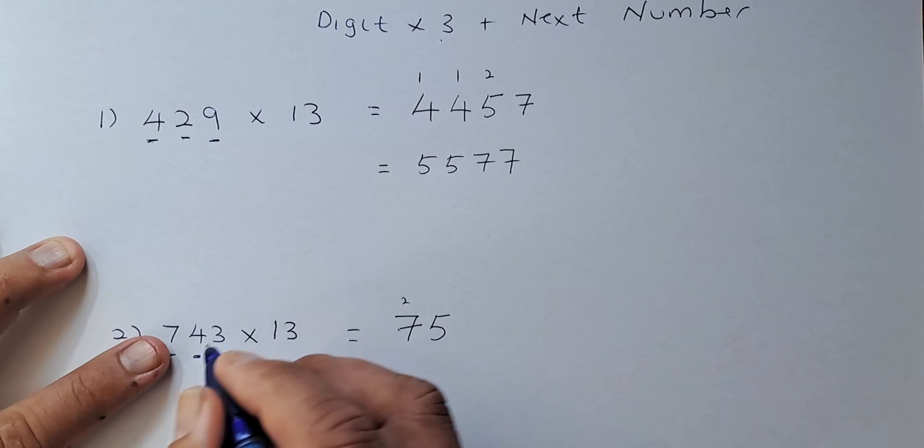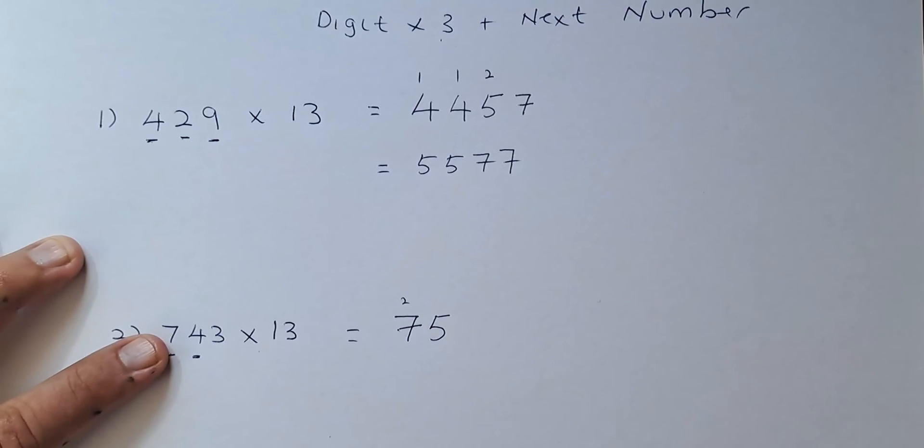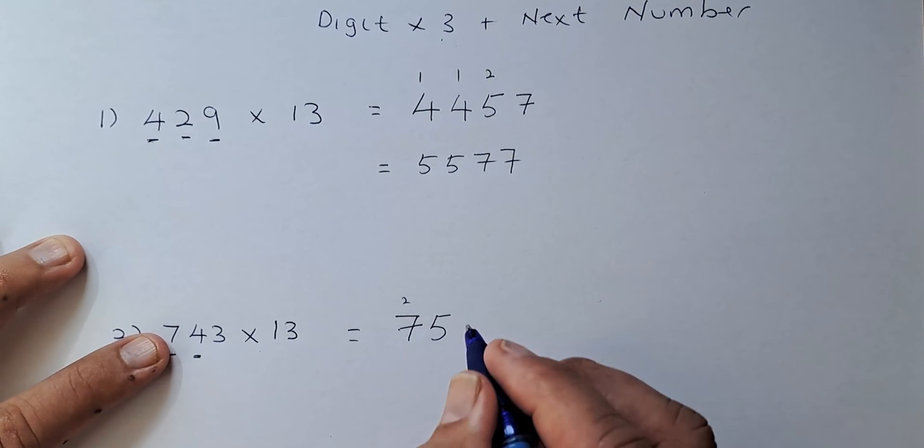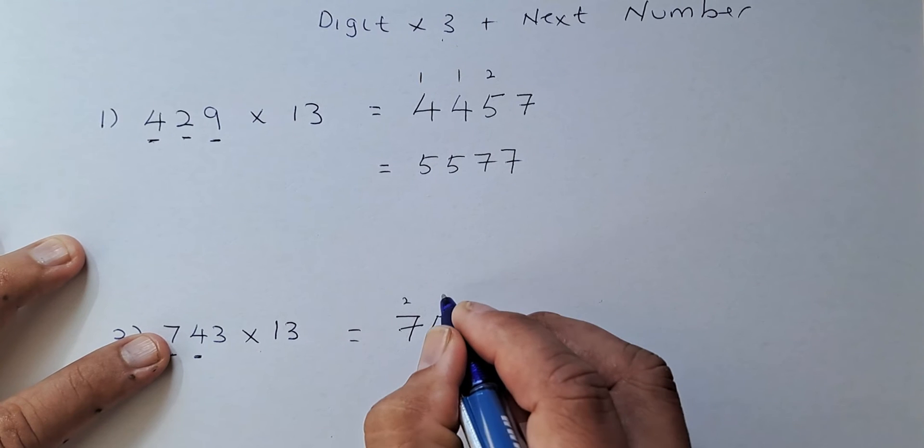Next, we look at 4. 4 multiplied by 3 is going to be 12 plus 3 is going to be 15. 5, carry up 1.